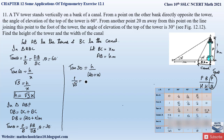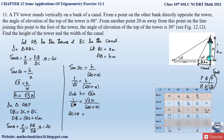From the trigonometric table, tan 30° = 1/√3. So 1/√3 = h / (20 + x). Substituting h = √3·x, we get 1/√3 = √3·x / (20 + x). Cross-multiplying gives 20 + x = √3 · √3 · x = 3x. Rearranging: 20 = 3x − x = 2x, so x = 20 / 2 = 10 meters.